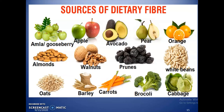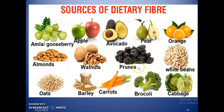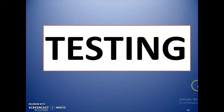Some of the various sources of dietary fiber are amla, august berry, apple with its peel, avocado, pear, orange, almonds, walnuts, prunes, white beans, oats, barley, carrots, broccoli, and cabbage.